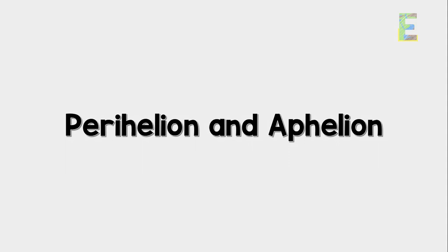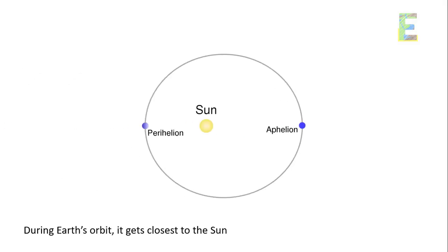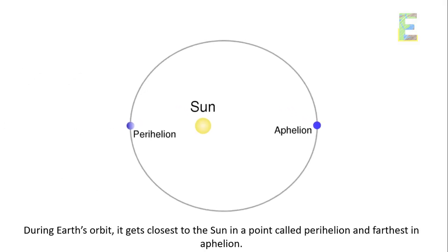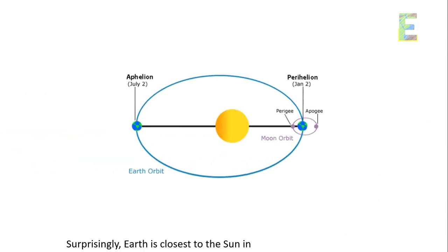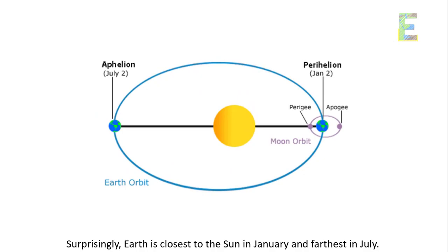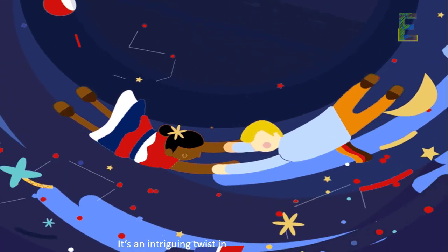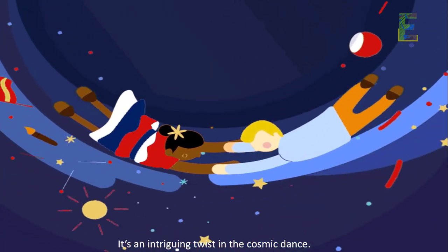Perihelion. During Earth's orbit, it gets closest to the Sun at a point called perihelion and farthest at aphelion. Surprisingly, Earth is closest to the Sun in January and farthest in July. It's an intriguing twist in the cosmic dance.